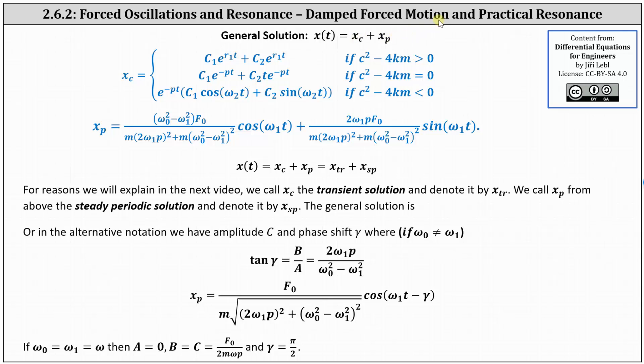When we have damped force motion, we have to call X sub C, X sub TR, which is the transient solution. And we call X sub P, X sub SP, which is the steady periodic solution. We'll talk more about this in the next lesson.